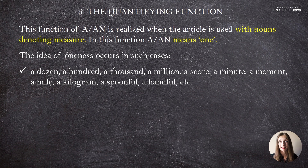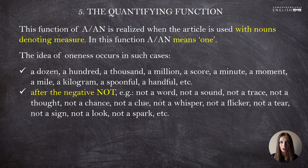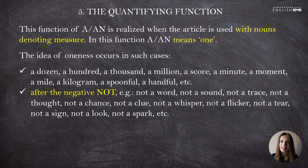Another case where this idea of oneness occurs is after the negative 'not': not a word, not a sound, not a trace, not a thought, not a chance, not a clue, not a whisper, not a flicker, not a tear, not a sign, not a spark, etc. These phrases suggest the complete absence of something. We use them for intensification — to stress that absence.